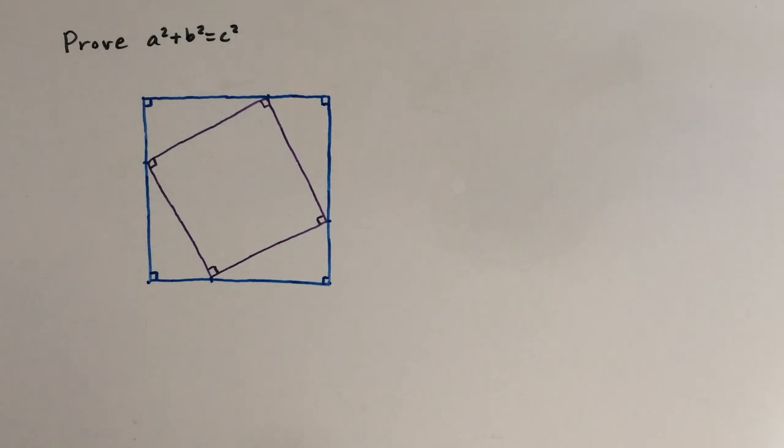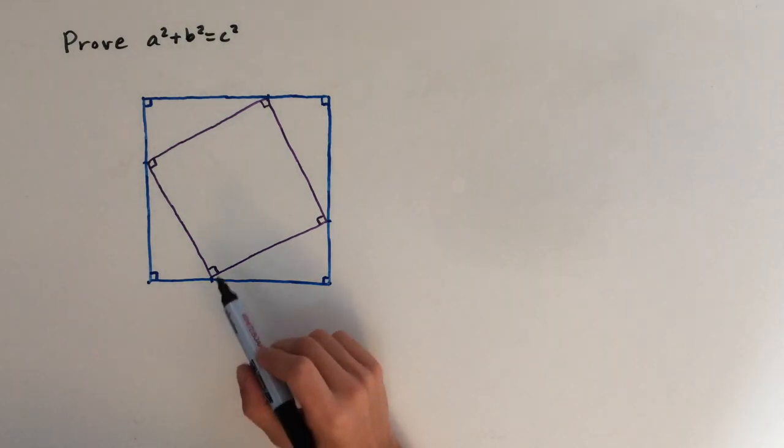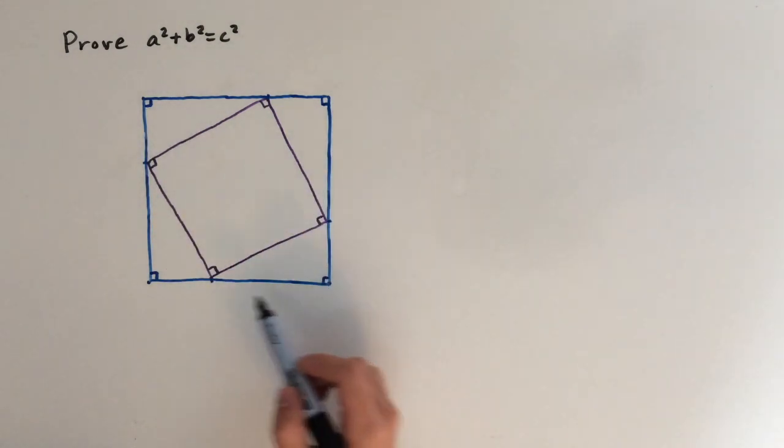Hey guys, in this video we'll be proving the Pythagorean theorem. So the arrangement we've got here is a small square incremented into a larger square.